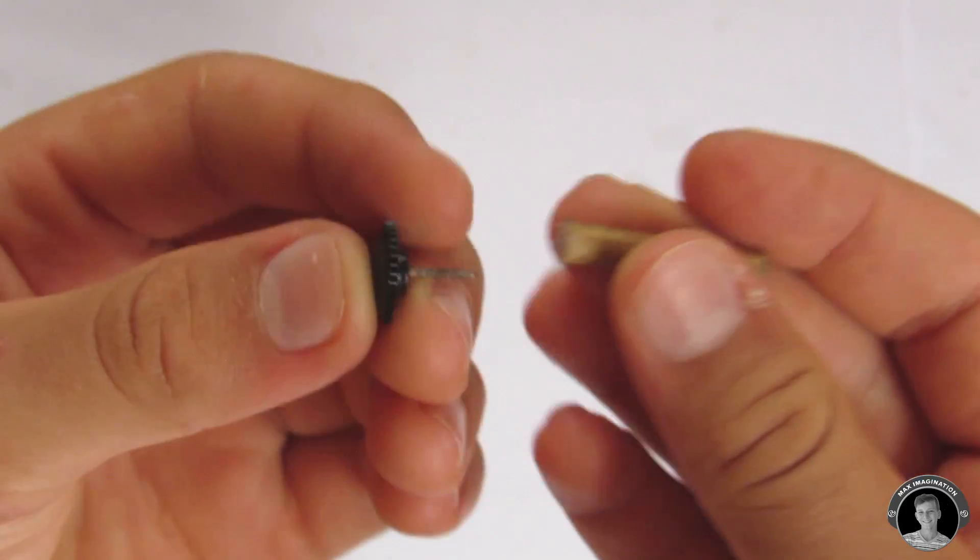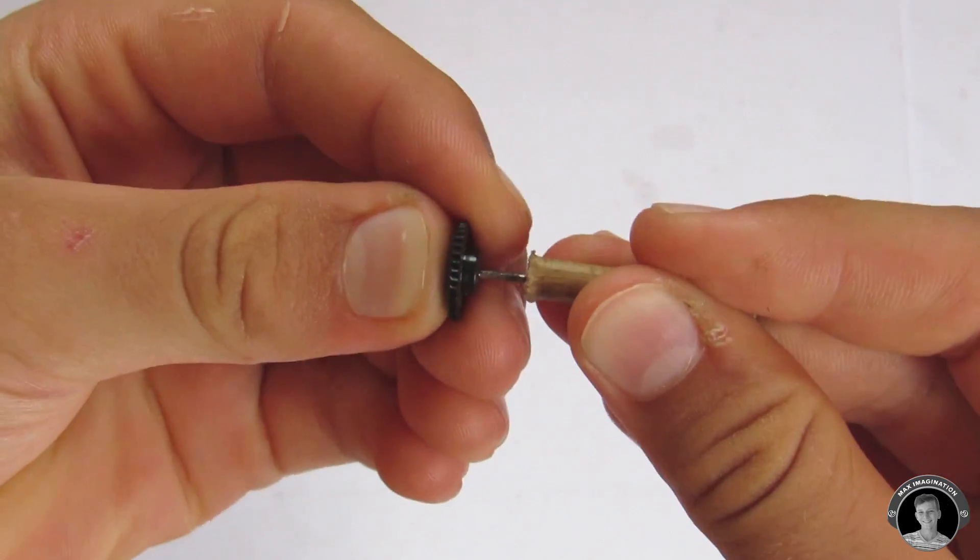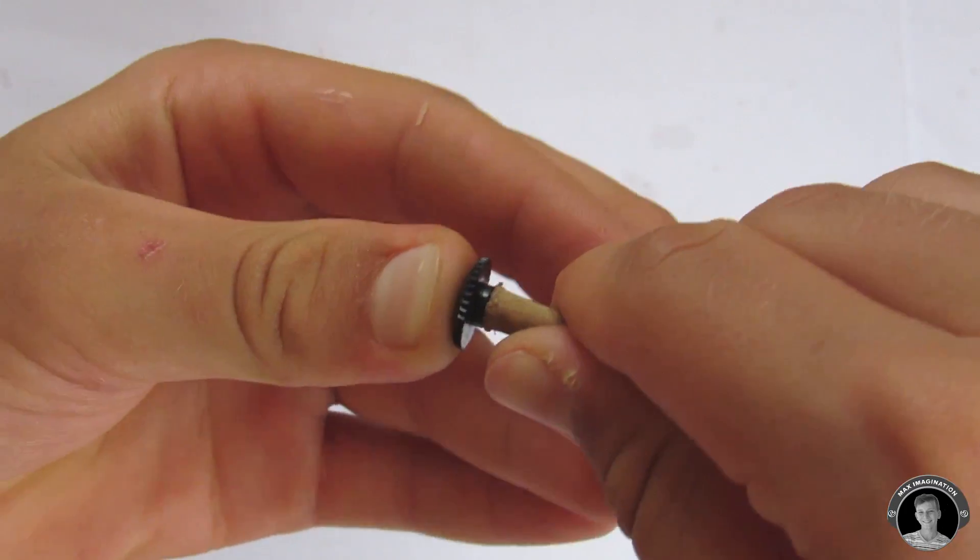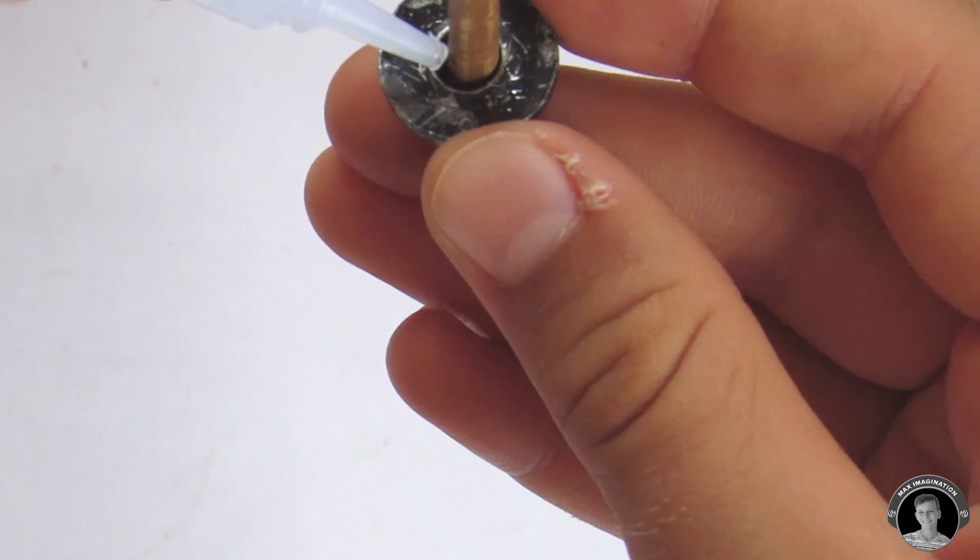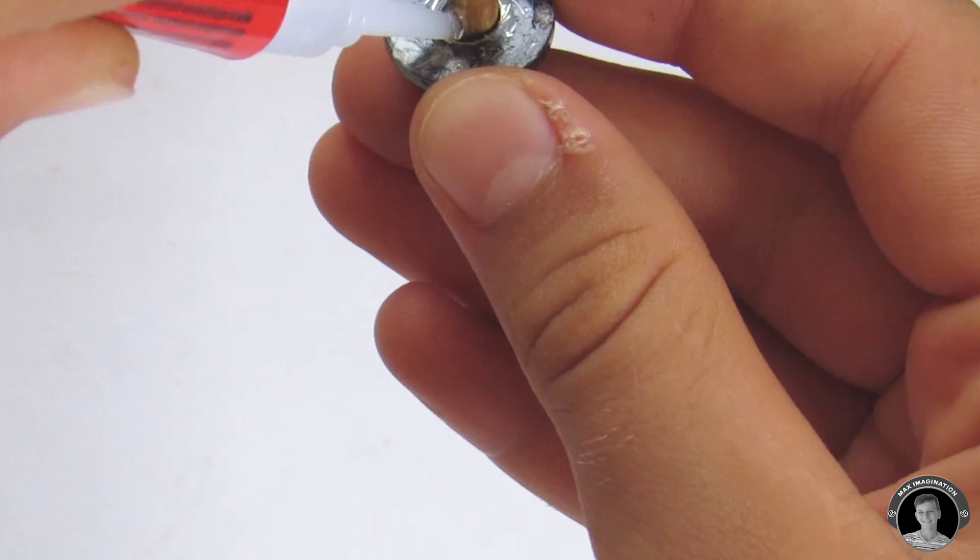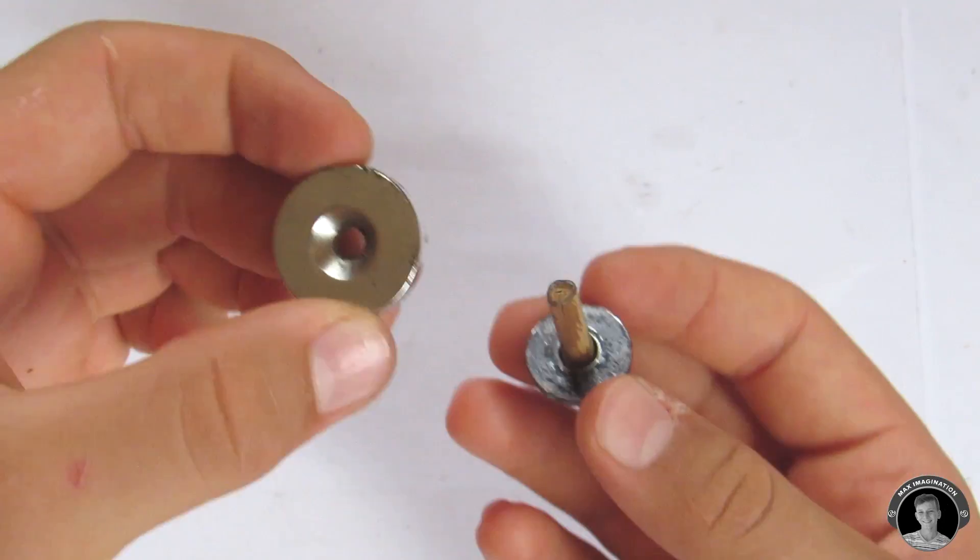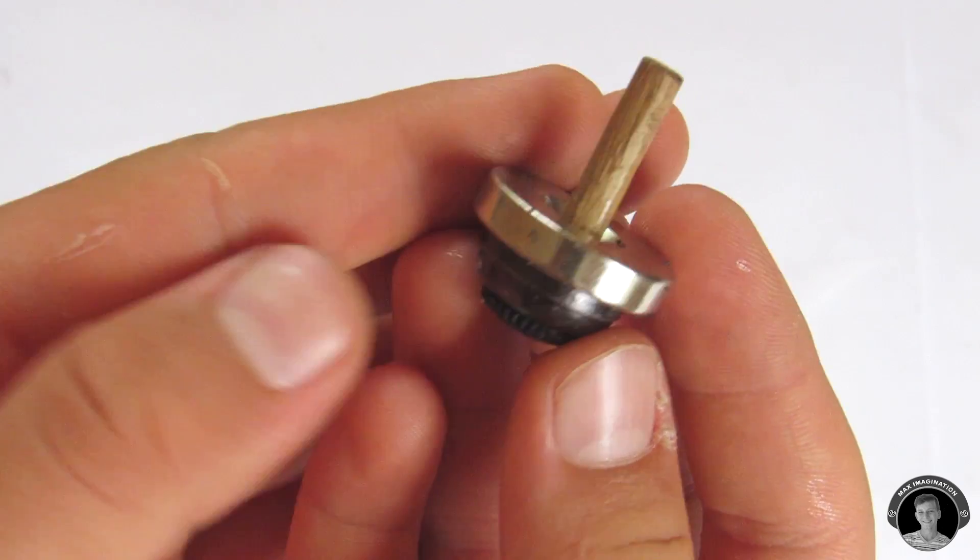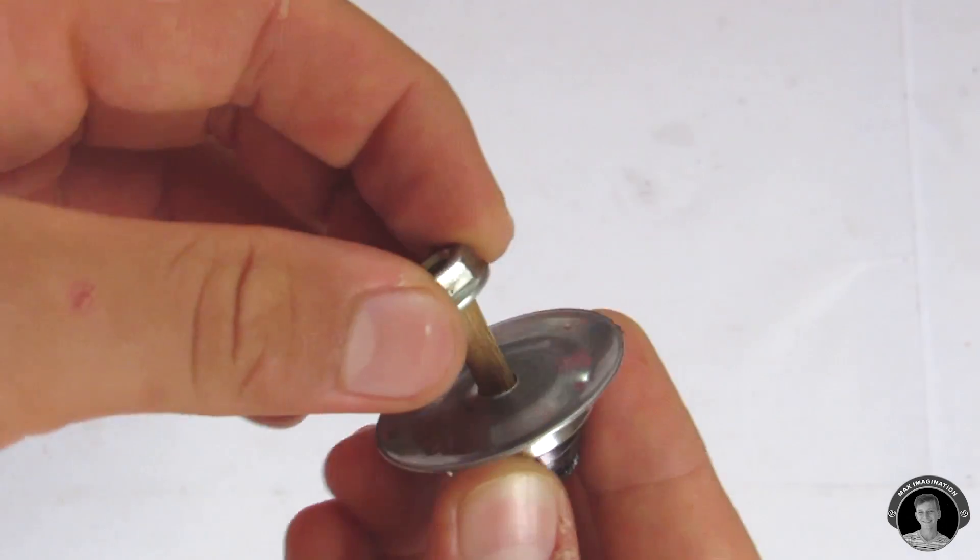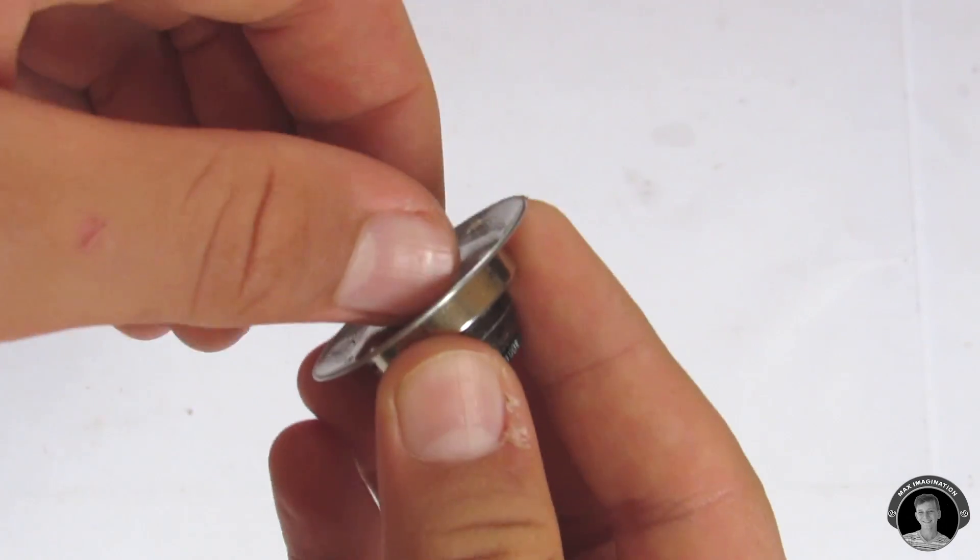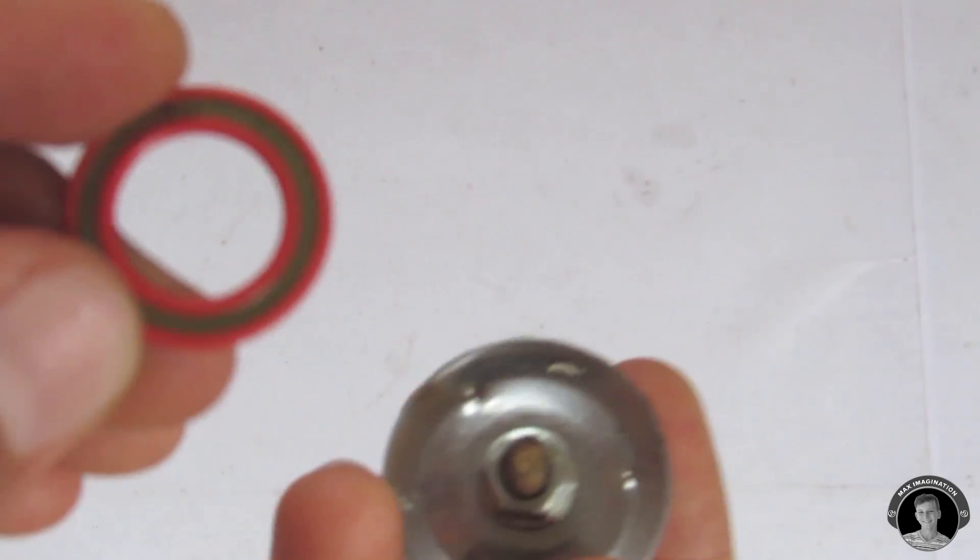Then insert a rounded thumb tack. Make sure it's rounded so that the spinning top can spin, and attach a spacer. Take your neodymium magnet and slide it on another spacer.